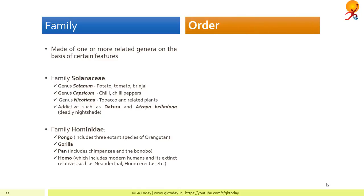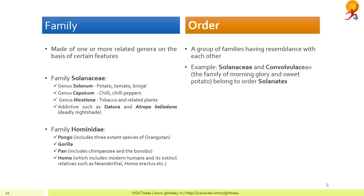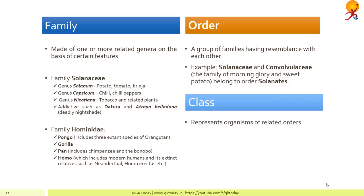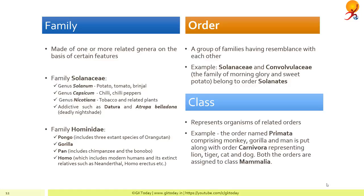A group of families which resemble each other forms an order. For example, Solanaceae and Convolvulaceae — families of morning glory and sweet potato — belong to the order Solanales. So as you can see: species together form genus, genera together form family, families together form order. Orders together form a class, which represents organisms of related orders. For example, the order Primata comprises primates such as monkeys, gorillas, and man, and the order Carnivora represents lions, tigers, cats, etc. — but they together belong to class Mammalia, which includes all mammals.